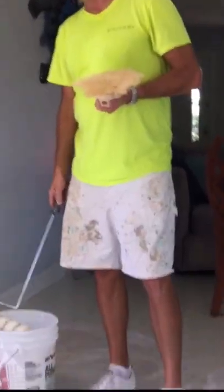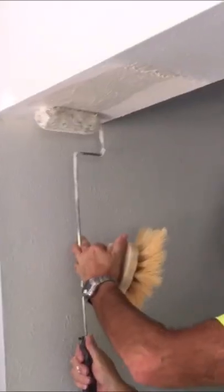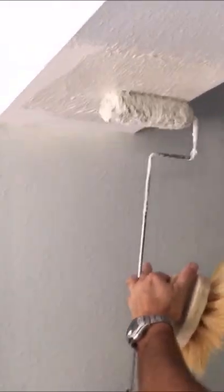Thin it down to a pancake batter consistency. It's dipping right in the bucket. Now I'm just going to roll out the joint compound. That's how you get a pretty consistent texture.